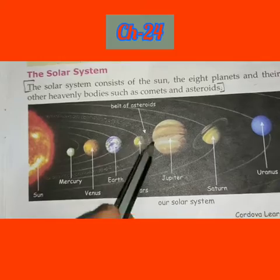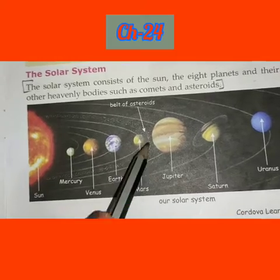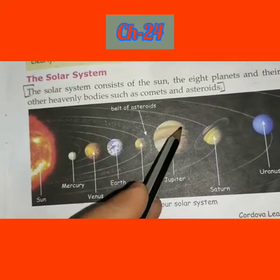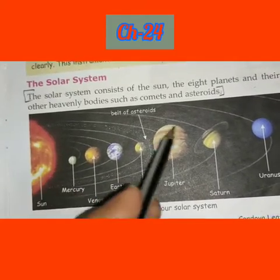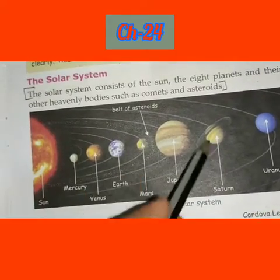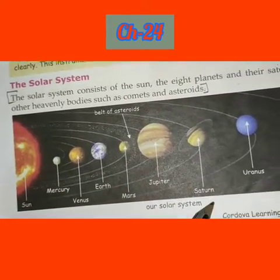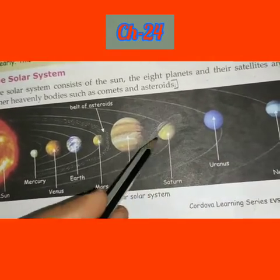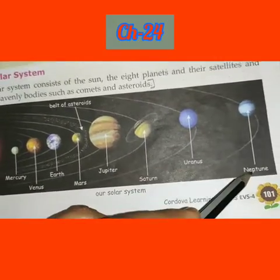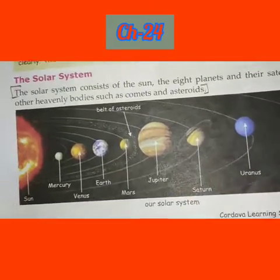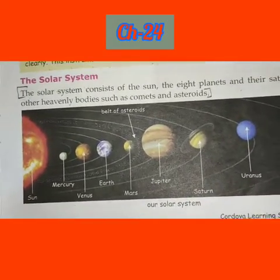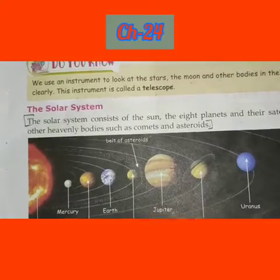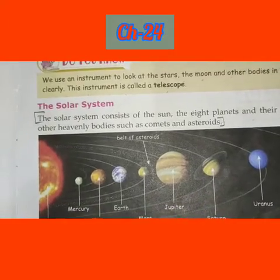Looking at the diagram, you can see Mercury, Venus, Earth, Mars, the belt of asteroids, then Jupiter, Saturn with its rings, Uranus, and Neptune. All the planets move in their own orbits around the sun. Please read the chapter carefully. Bye bye.